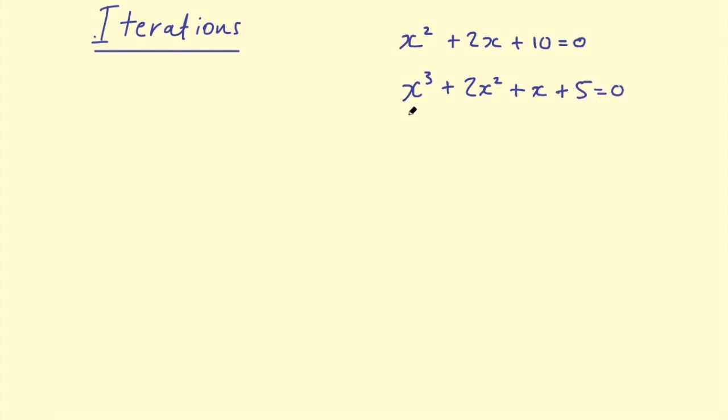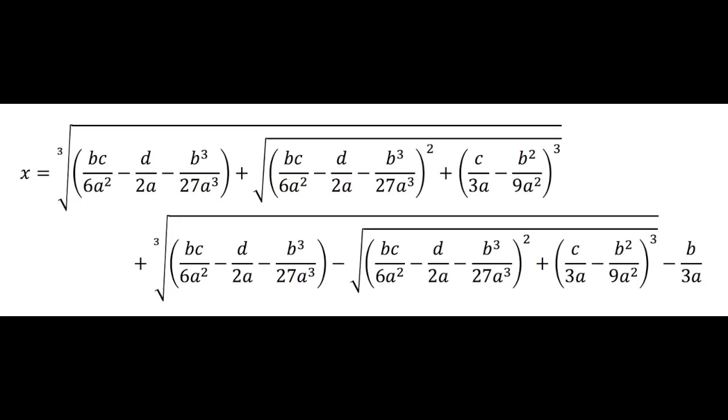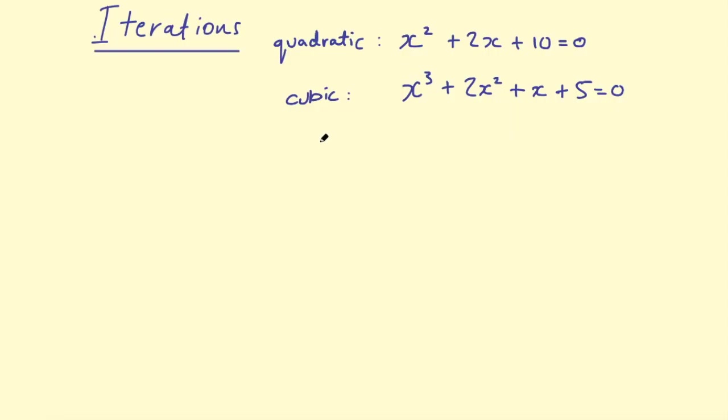That's an example of a cubic, and they're a lot harder to solve if you can't factorise them. If you can't factorise them, we don't really have an easy formula to solve cubics, and sometimes to solve a cubic, we need to use iterations.